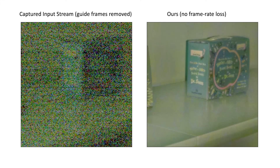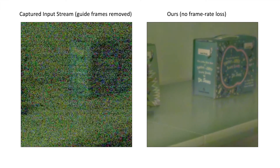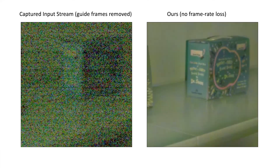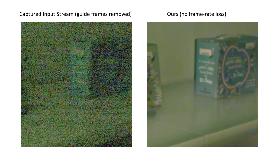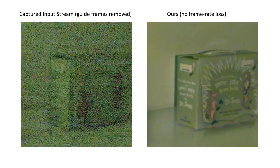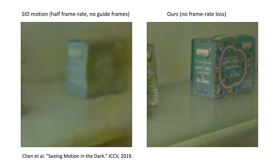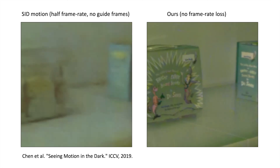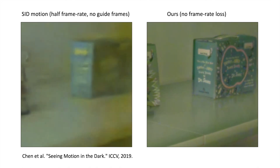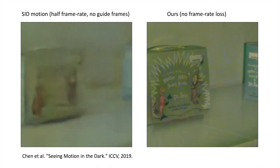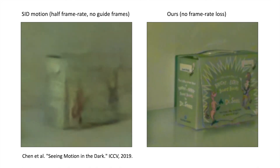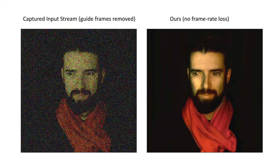We show the reconstructed videos for dynamic scenes. The left is the input video with guide frames removed. We also show the qualitative comparison with a no-flash video reconstruction method. State-of-the-art no-flash video denoising approaches cannot recover sufficient image details when the camera sensor captures poor signals.